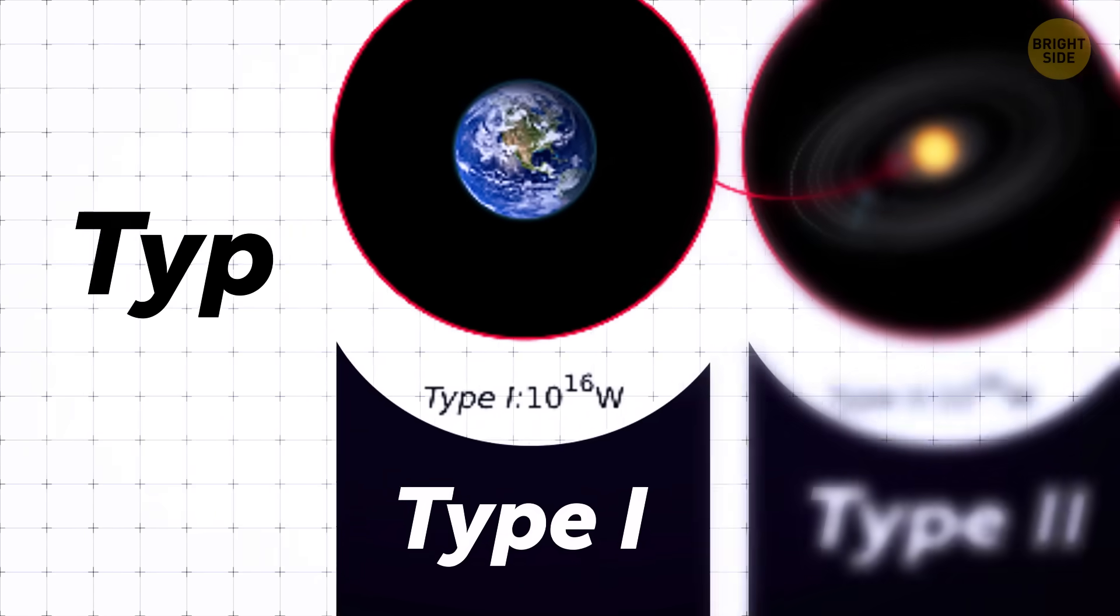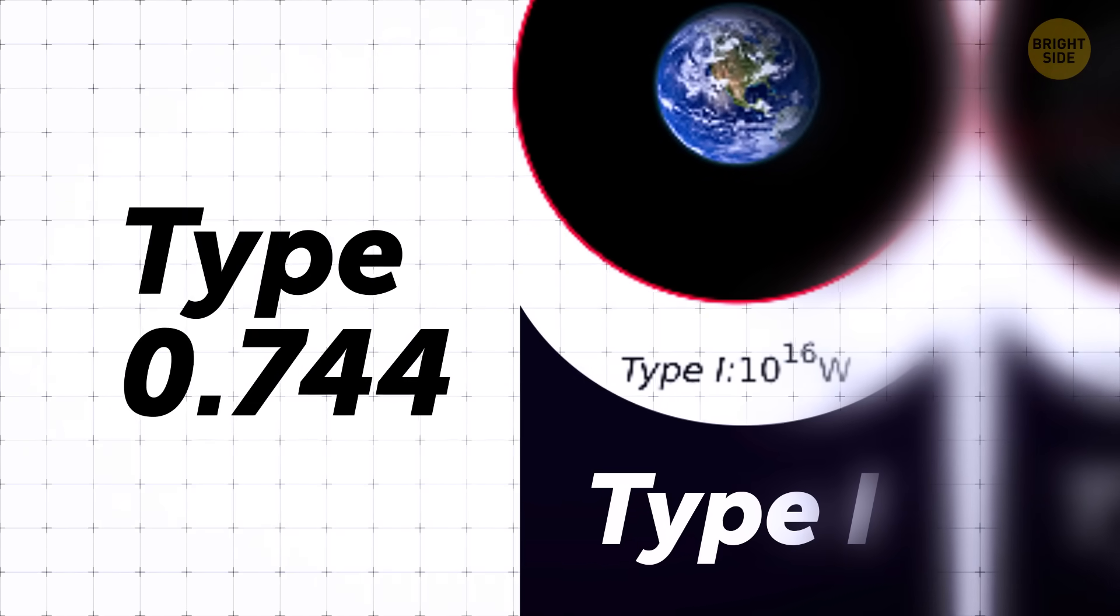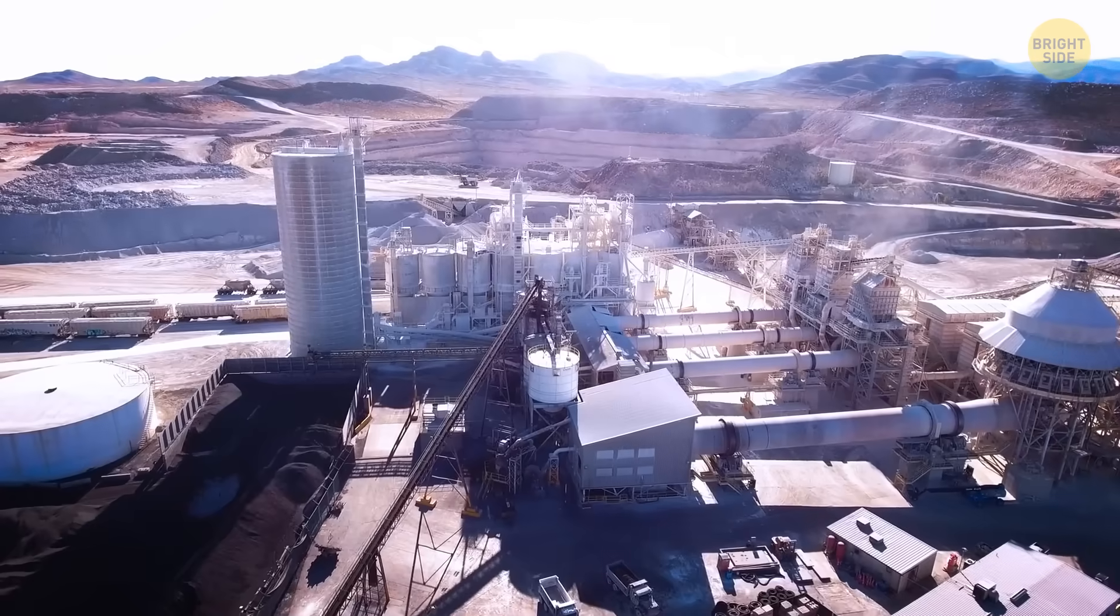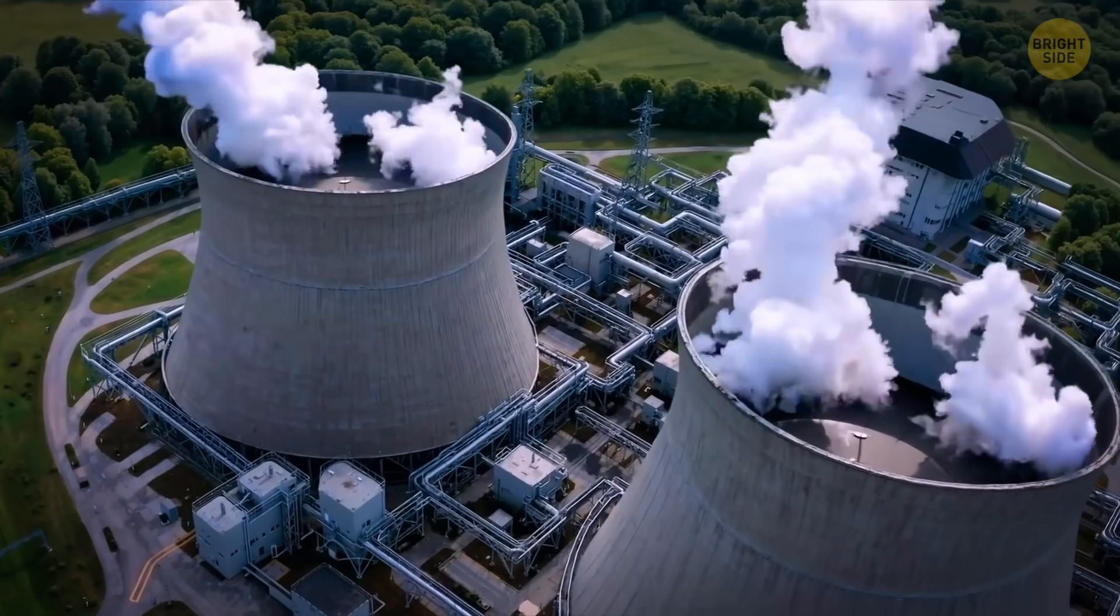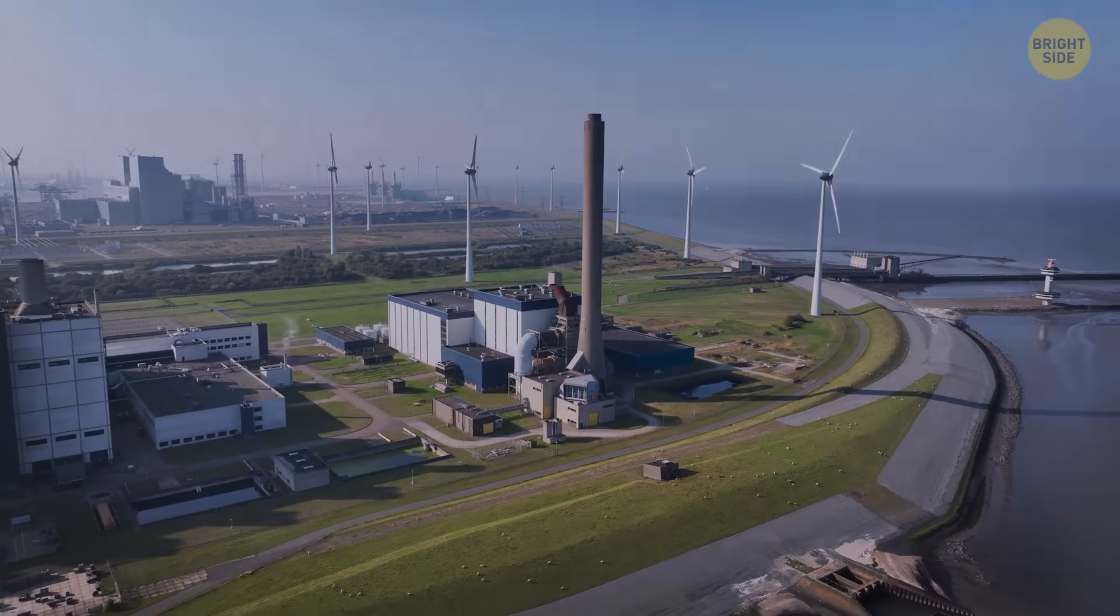Right now, Earth's civilization ranks about type 0.7449, give or take. That means that we haven't even maxed out the energy available to us on Earth, including fossil fuels, renewables, and nuclear power. We're still taking baby steps on this cosmic scale.